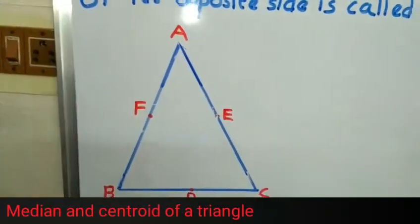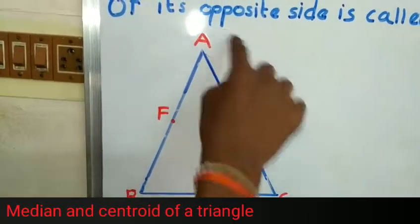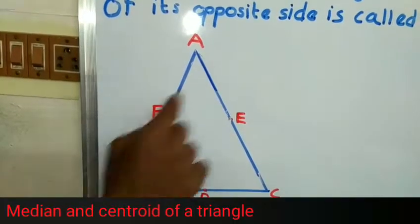ABC is a triangle. D is the midpoint of BC, E is the midpoint of AC, and F is the midpoint of AB.